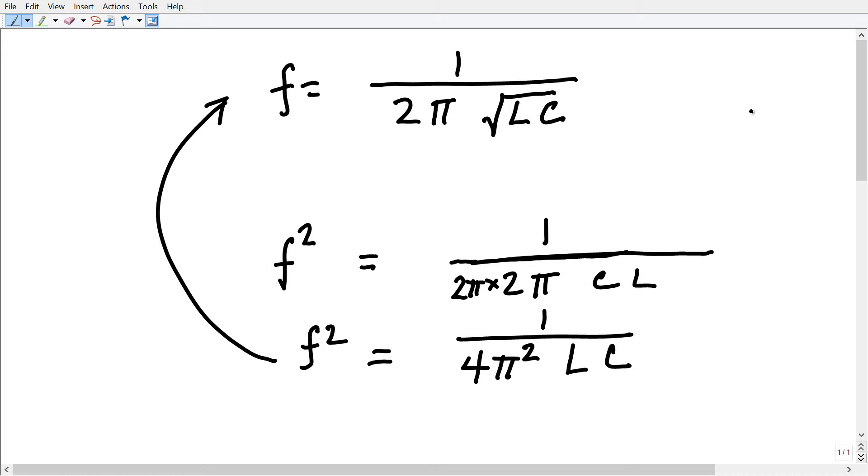That looks strangely familiar, doesn't it? The frequency in Hertz at resonance is equal to 1 over 2π times the square root of the inductance in henrys and the capacitance in farads. Or, the frequency can also be considered in terms of other units,